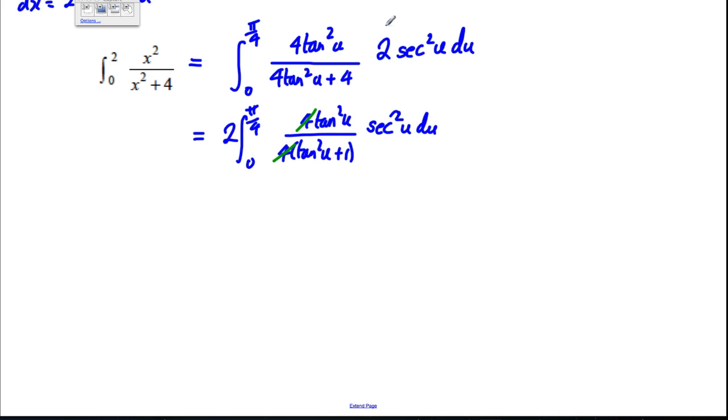Now, there is an identity you should know at this point. You should know, because you know that sin²(x) plus cos²(x) is one. And if you divide everything through by cos², you get tan²(x) plus one is equal to sec²(x).